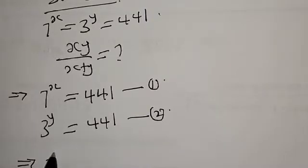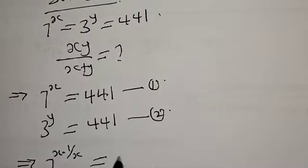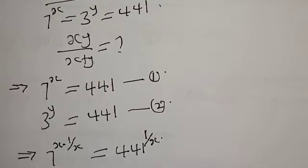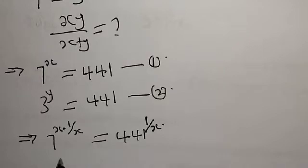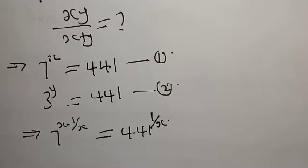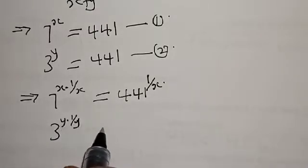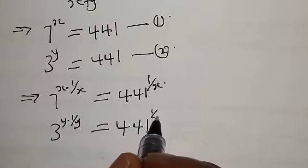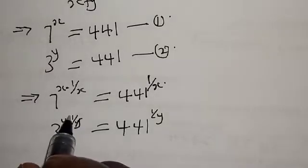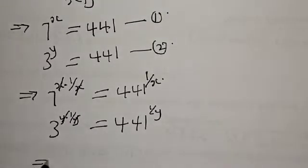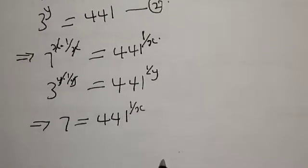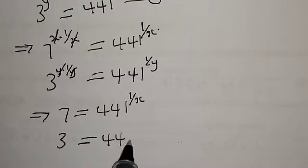This implies that 7 raised to power x times 1 over x is equal to 441 raised to power 1 over x. We multiply both sides of the exponent by 1 over x. Similarly, 3 raised to power y times 1 over y is equal to 441 raised to power 1 over y. This cancels, leaving 7 equal to 441 raised to power 1 over x, and 3 equal to 441 raised to power 1 over y.